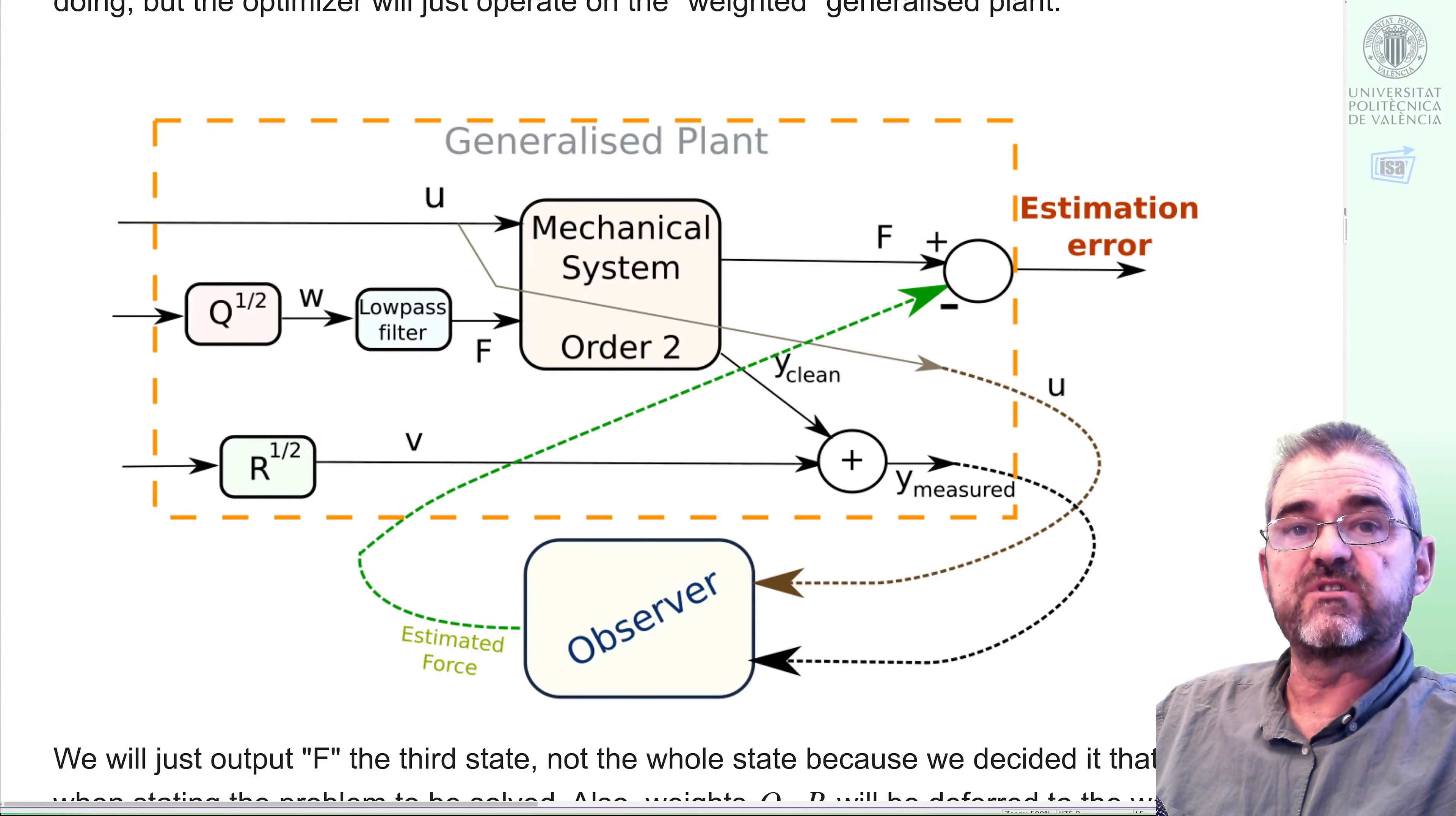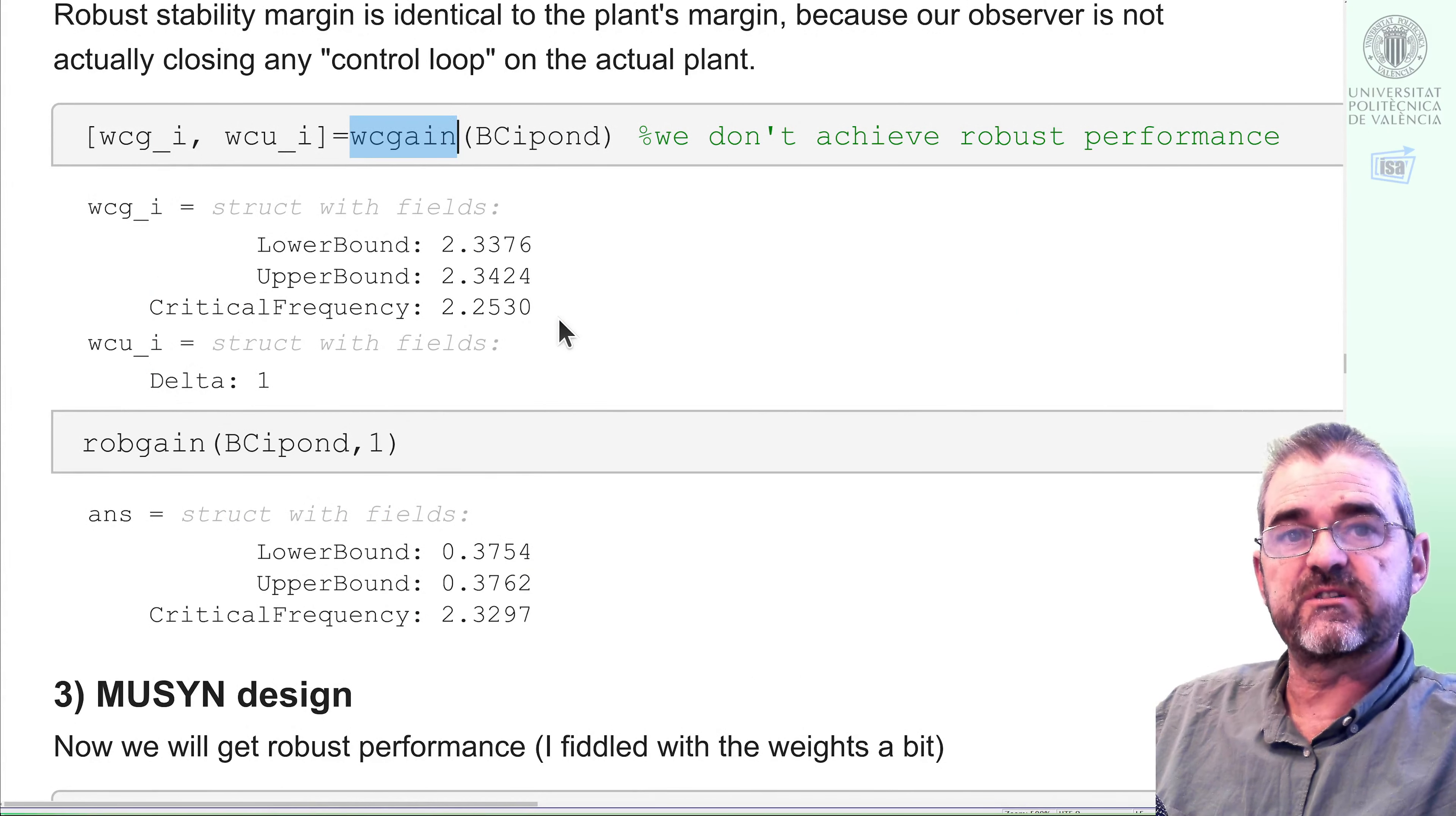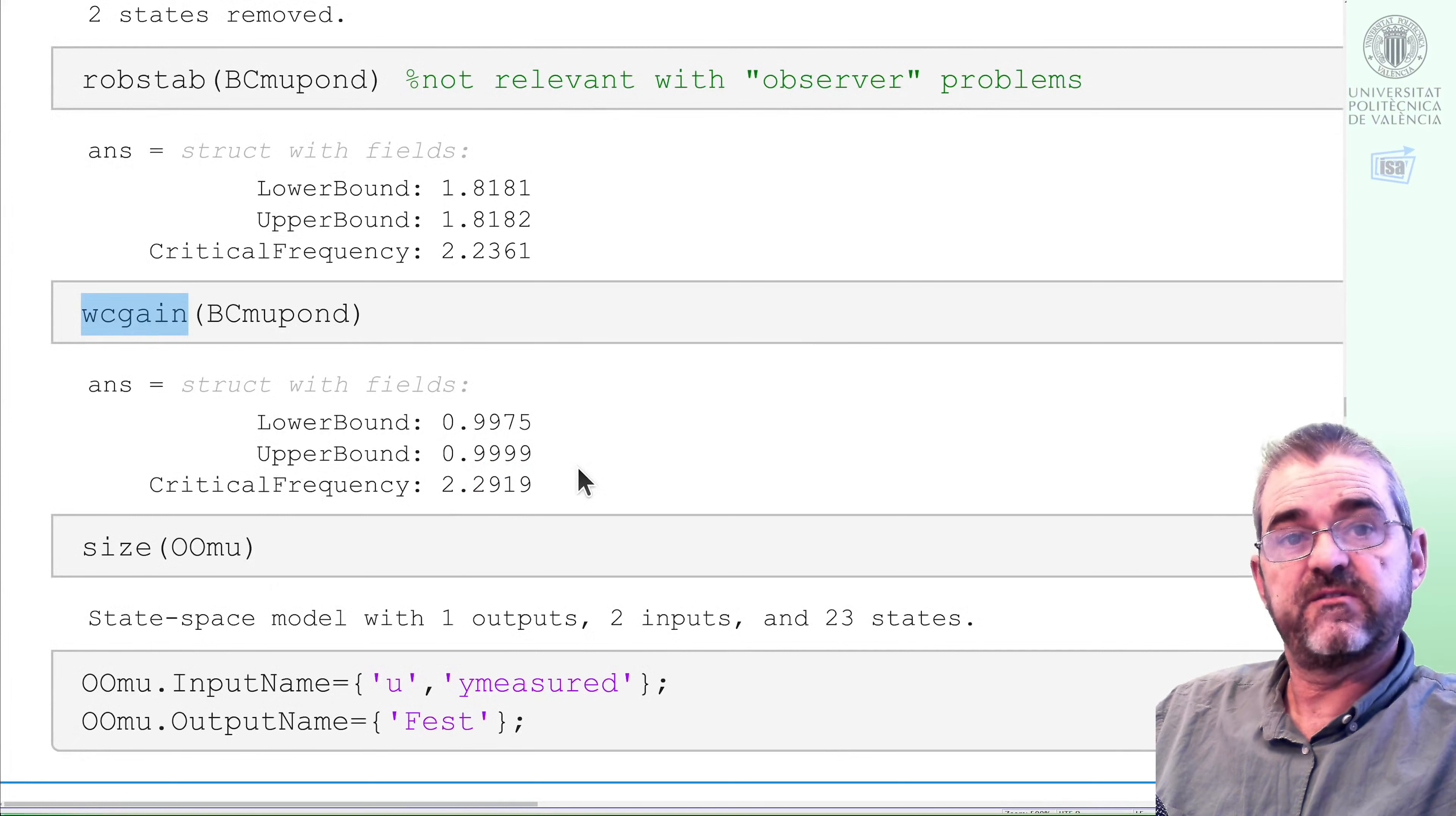And then we did set a generalized plant with constant input weights in all three cases and some frequency-dependent weights on the H infinity and mu-synthesis options. So we obtained some worst-case gain figures for the H infinity, higher than 1 meant that robust performance was not achieved, but a worst-case gain of 0.99 which meant that robust performance was achieved with mu synthesis.